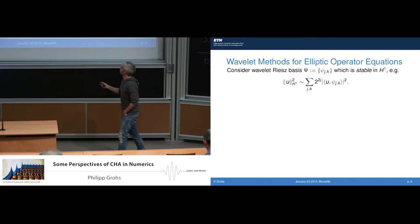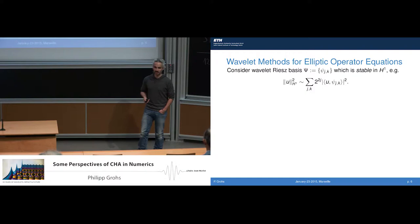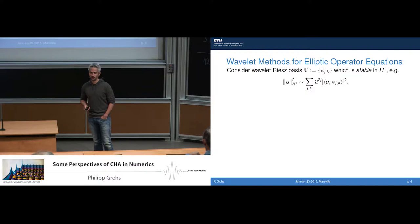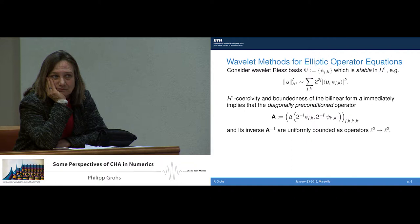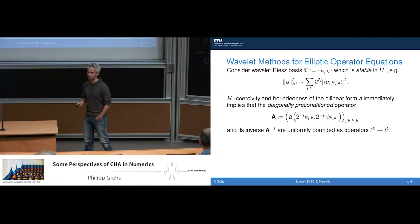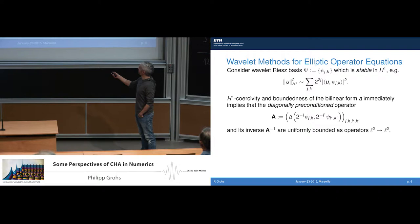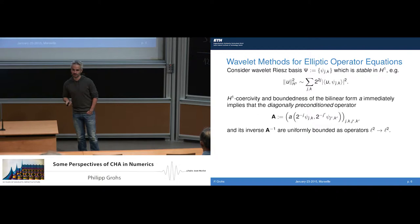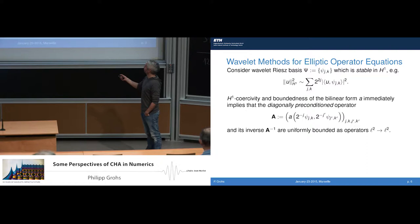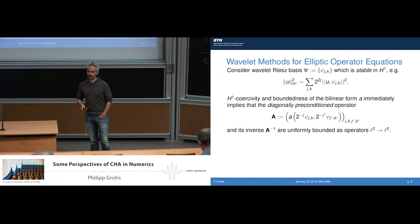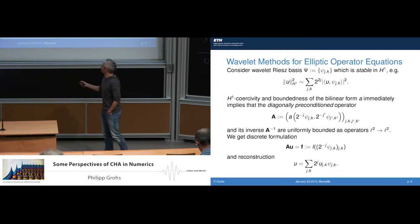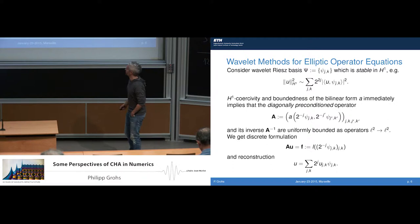If we consider a wavelet basis which is stable in H1 — which means that the H1 Sobolev norm can be characterized by a weighted L2 norm on the transform coefficients — then one can make an ansatz, writing the solution function U and the test function V in terms of this wavelet basis, apply a diagonal preconditioning by inserting the weights from this norm equivalence. Using this diagonal preconditioning, one gets a uniformly bounded and boundedly invertible operator on little L2, yielding a well-conditioned problem.